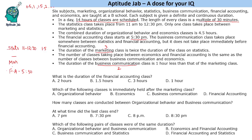So business communication could come at one of two positions before financial accounting. Business communication is two hours and marketing is three hours — total five hours. From 12:30 to 5:30 is a five-hour gap, so the logic says business communication comes right after statistics at 12:30, followed by marketing of three hours, reaching 5:30.